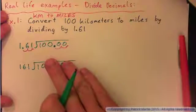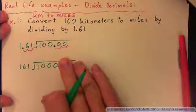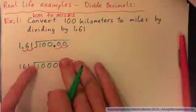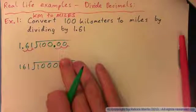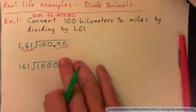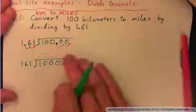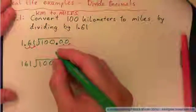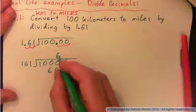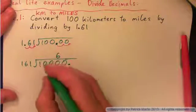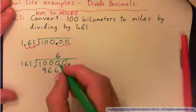161 won't go into 10, won't go into 100, but will go into 1000. 161 into 1000 — think in terms of 160s basically. You just take a guess; if your guess doesn't work, try another. I'm going to try 6. 6 ones is 6, 6 sixes is 36, carry the 3, 6 ones is 6 and 3 is 9.